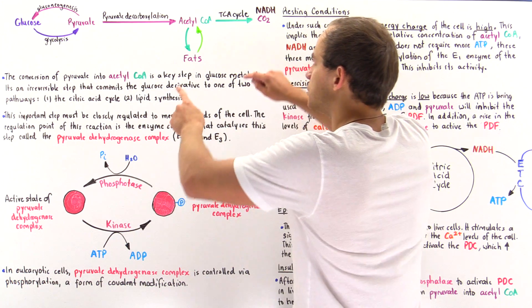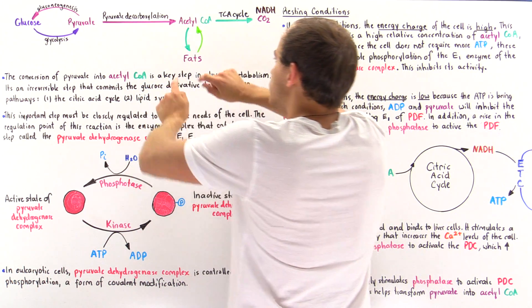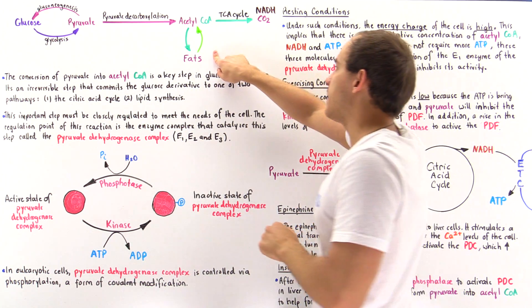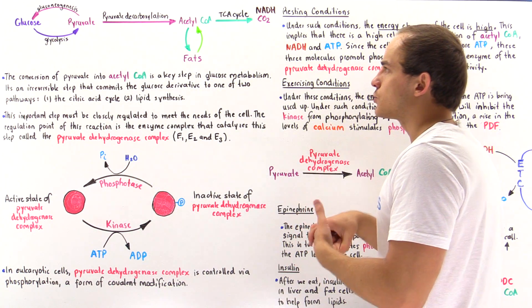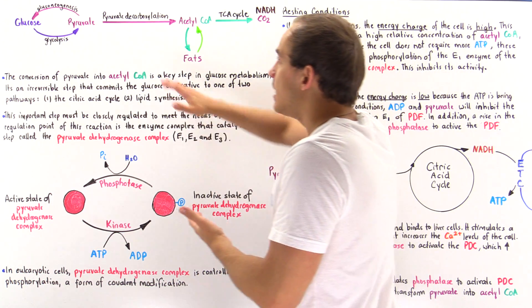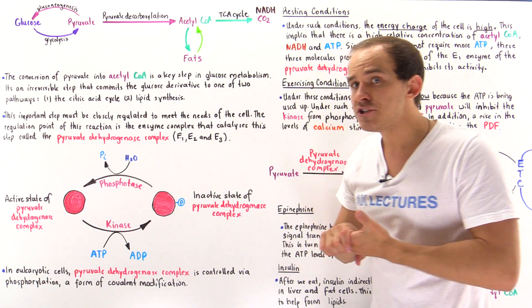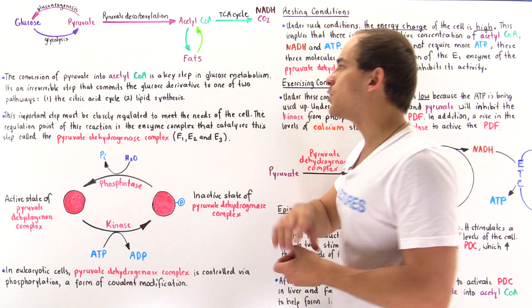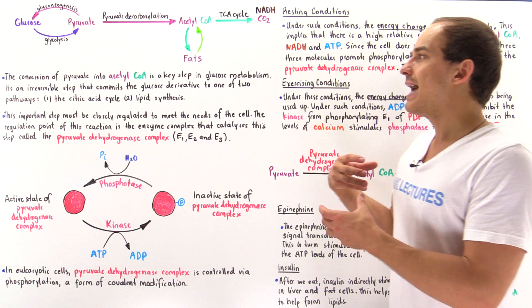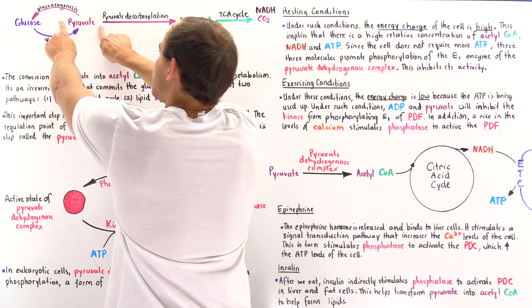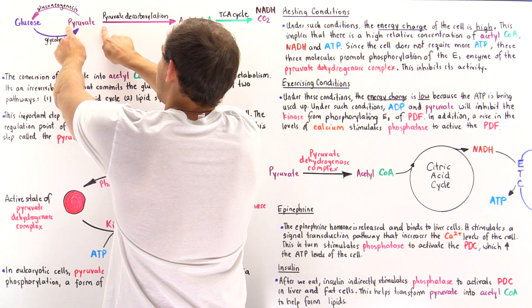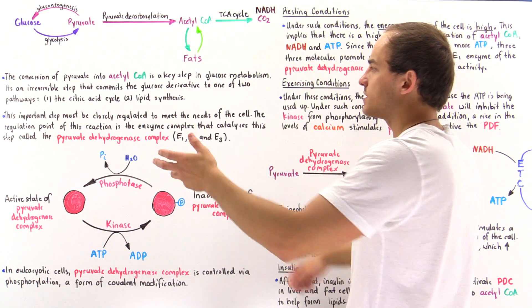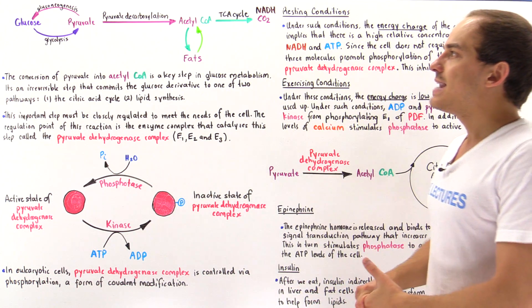Or, under other conditions, the acetyl-coenzyme A can be committed to a second pathway that produces lipids, which we'll discuss in a future lecture. So, we see that the pyruvate decarboxylation process is a very important, crucial step in glucose metabolism, because it essentially commits that glucose derivative molecule — the pyruvate — into carrying out the citric acid cycle, or in some cases, lipid synthesis.